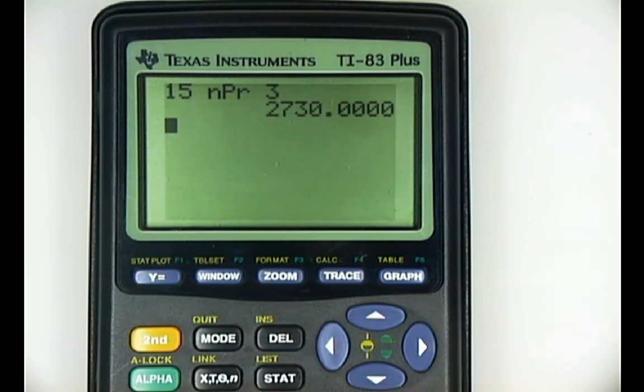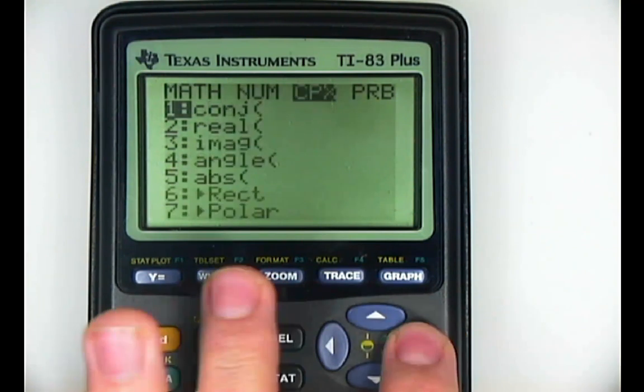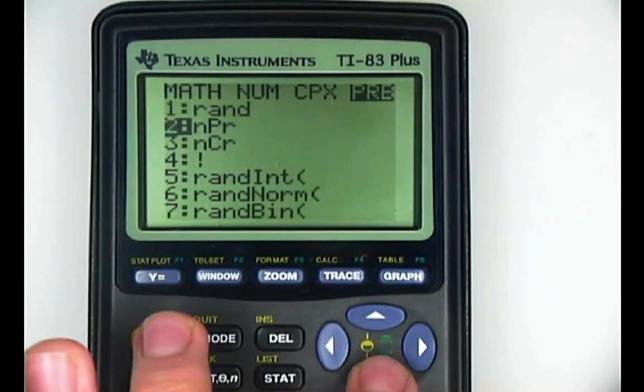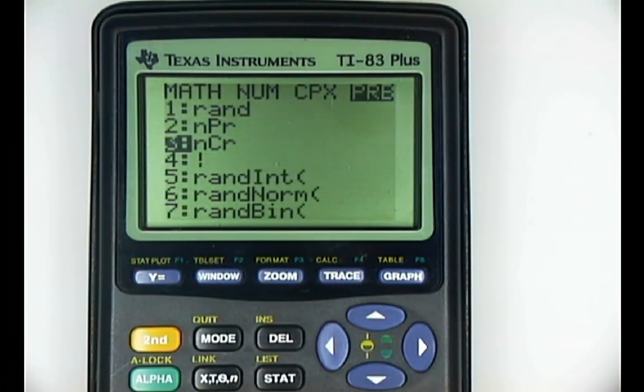So let's suppose that now we're going to do order doesn't matter. We just want combinations. So we would do 15. Again, that's our n. We would go to MATH, scroll over to PRB, and this time we would select nCr for combination.